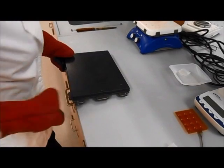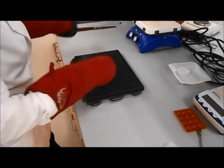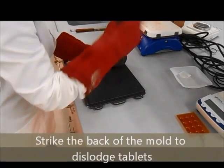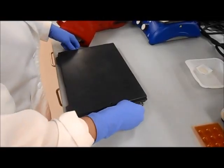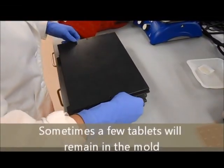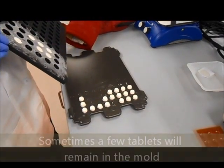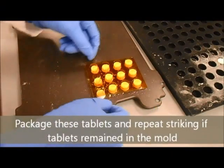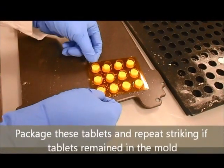When the cooling is done, use the top plate as the smooth side to help remove the tablets by striking the back of the bottom plate. If there are tablets left in the mold, package up the ones that came out and then repeat the striking process.